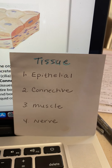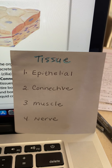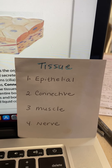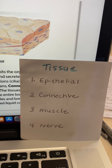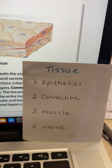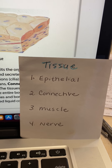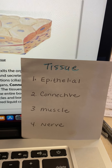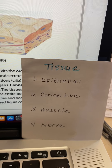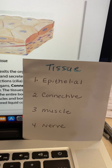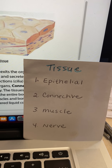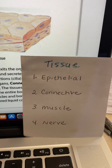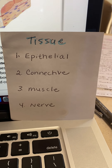Then we have connective tissue. What does connective tissue do? It connects the body parts — like tendons and ligaments. Connective tissue is also in blood cells and lymph cells; it's a liquid connective tissue. It's also in fat cells, where it protects the organs from injury.